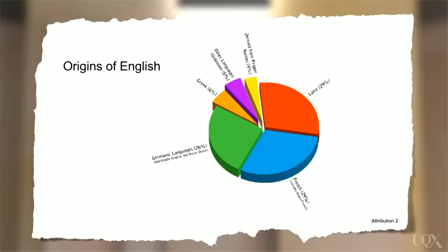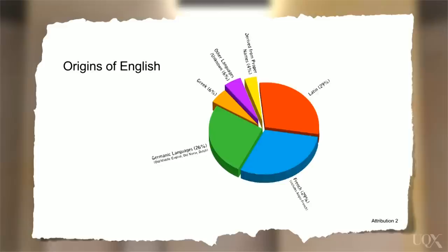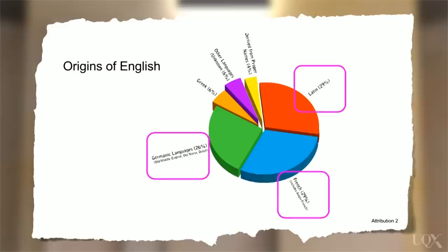Now let's look at a pie chart. We should look first at the title: Origins of English — meaning where the English language has come from. With a pie chart, the whole pie represents 100% of something; in this case, it is 100% of the English language. We can see that English has borrowed from many other languages and also from names. There are three large pieces and three smaller pieces, with the size of each piece representing the influence each language has had on English. Most of the influence has come from three main sources — Latin, French, and Germanic languages — in approximately equal parts.